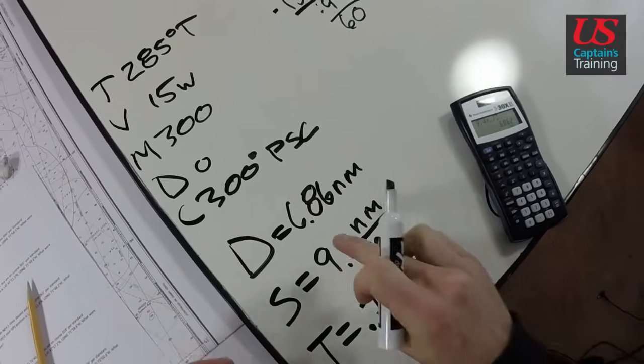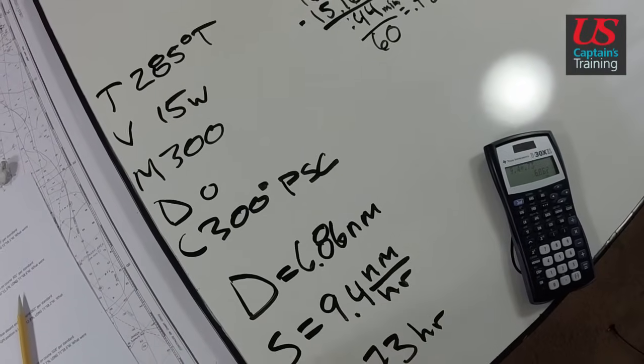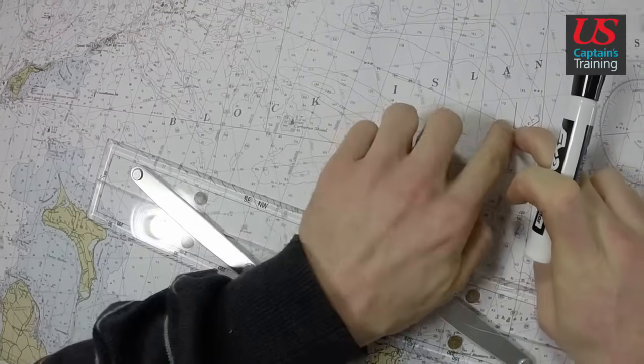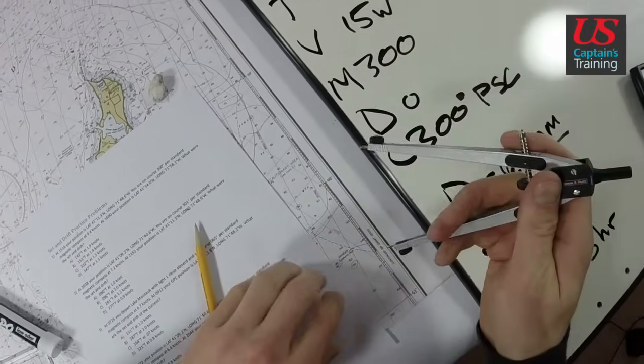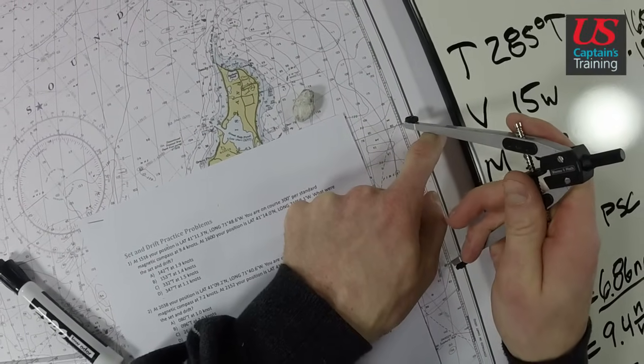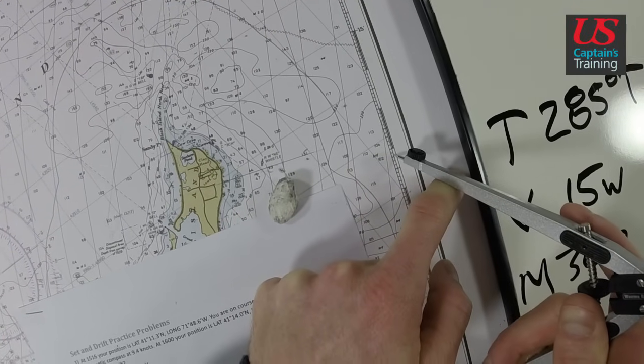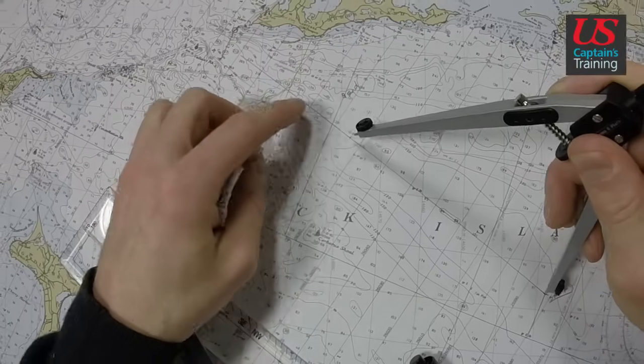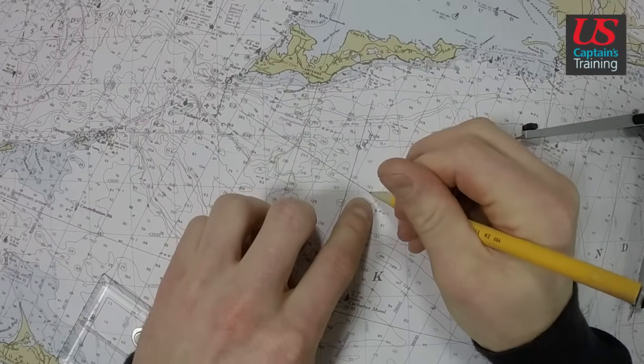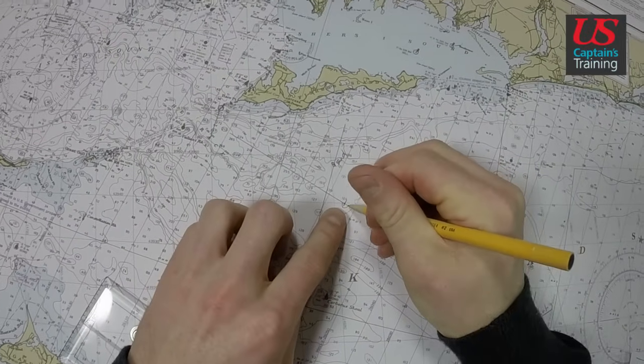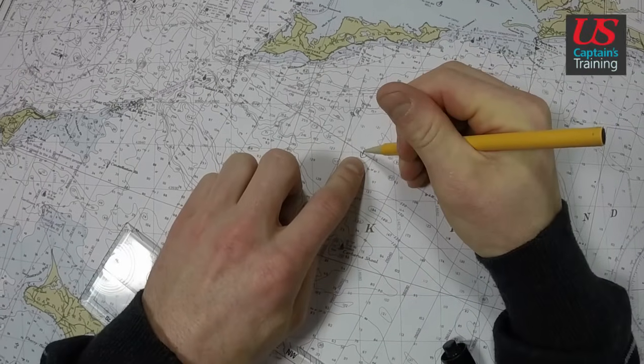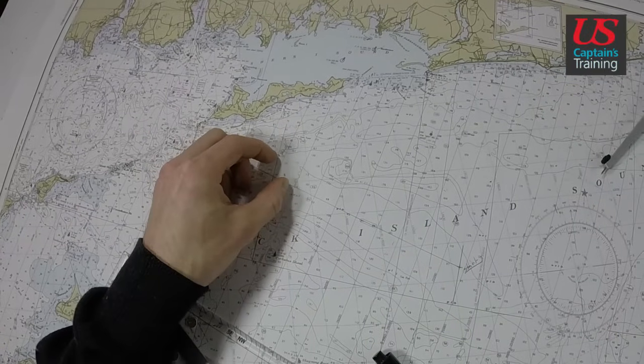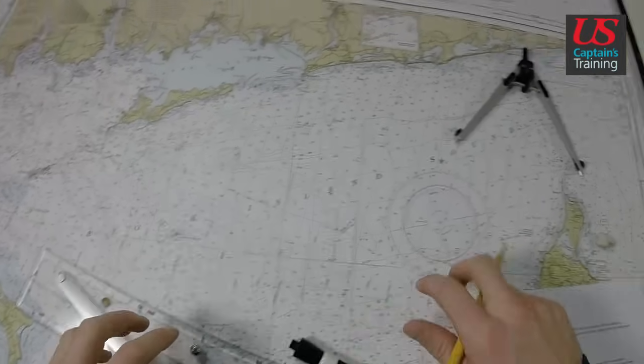This distance, 6.86 nautical miles, that's how far we should have traveled down this line if no current was acting on us. I'm going to go from our start down 6.86, mark it. This is our dead reckoning line. This is where we reckon we should end up. We ended up here, so a current pushed us from here to there. What degrees did that current push us at? That's the set. And this distance divided by the time it took us to travel that distance is our drift, which is a speed.